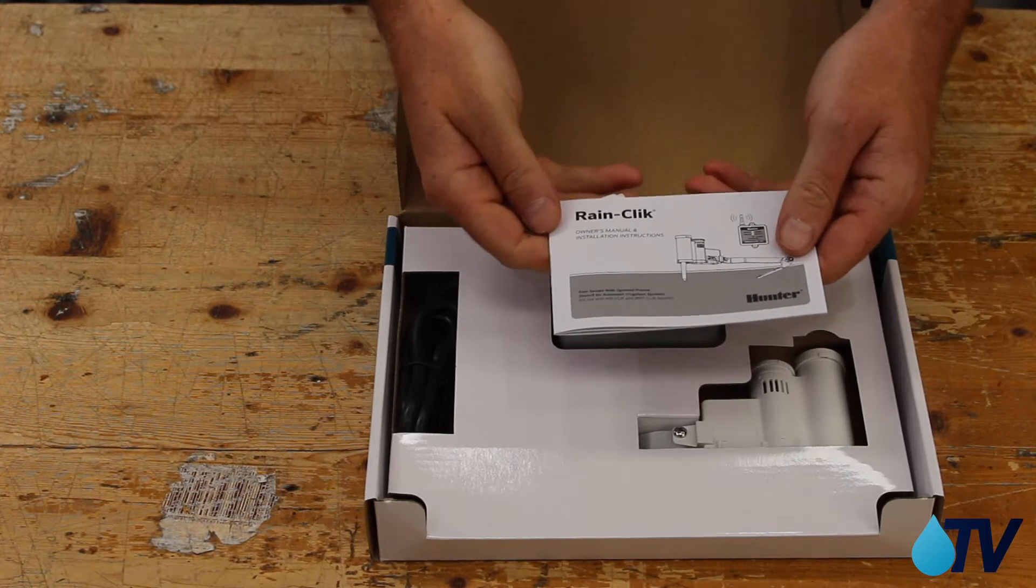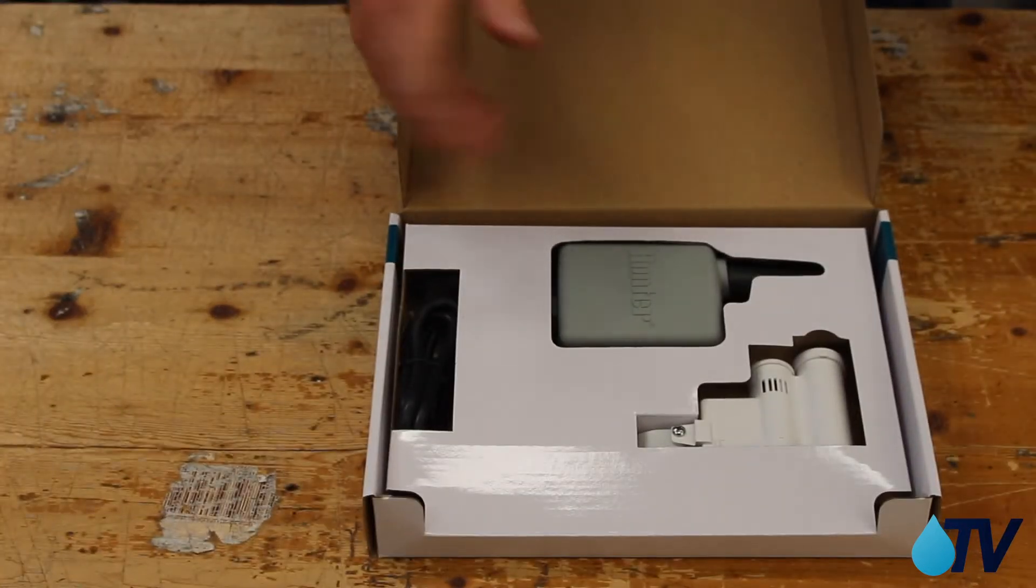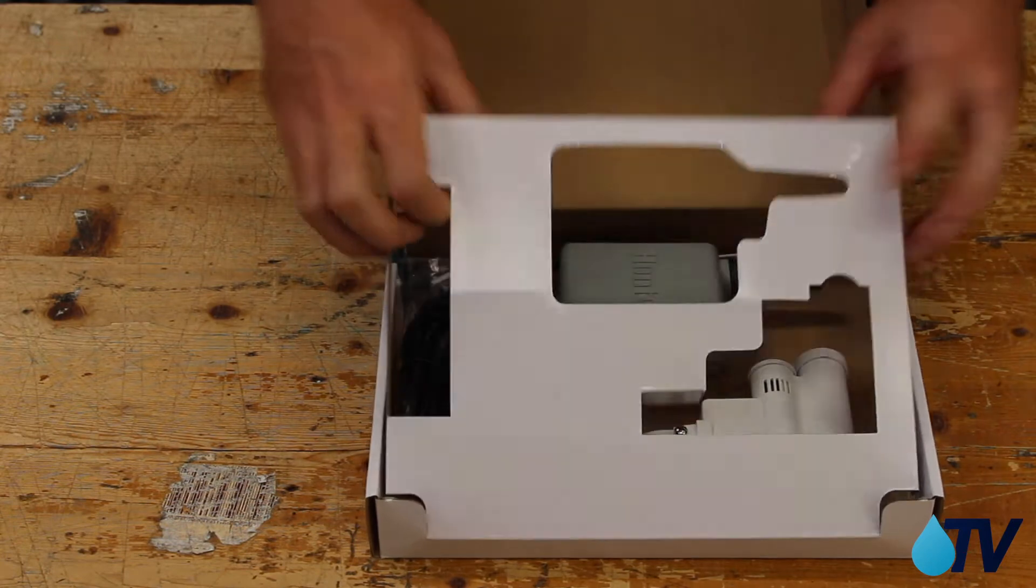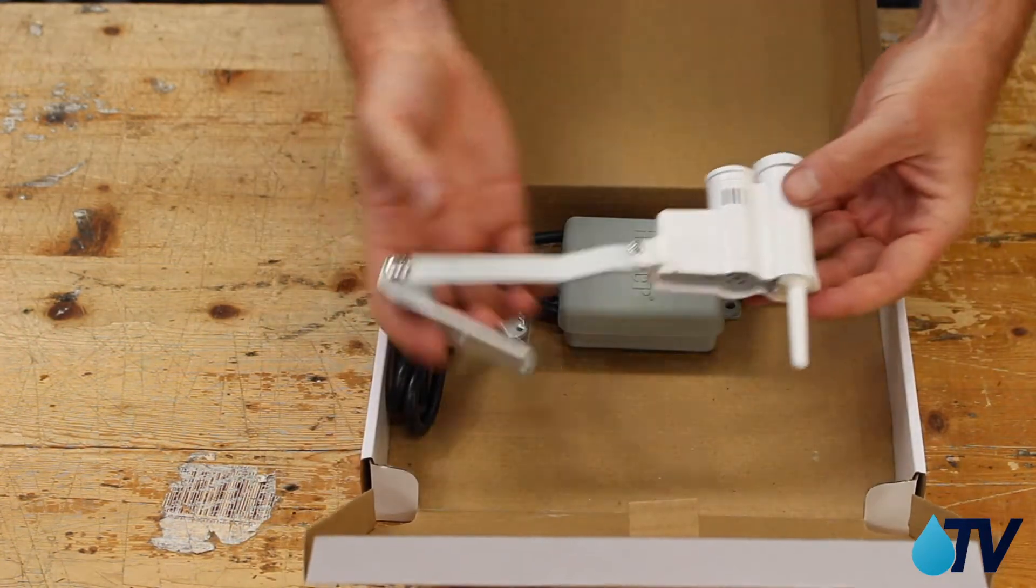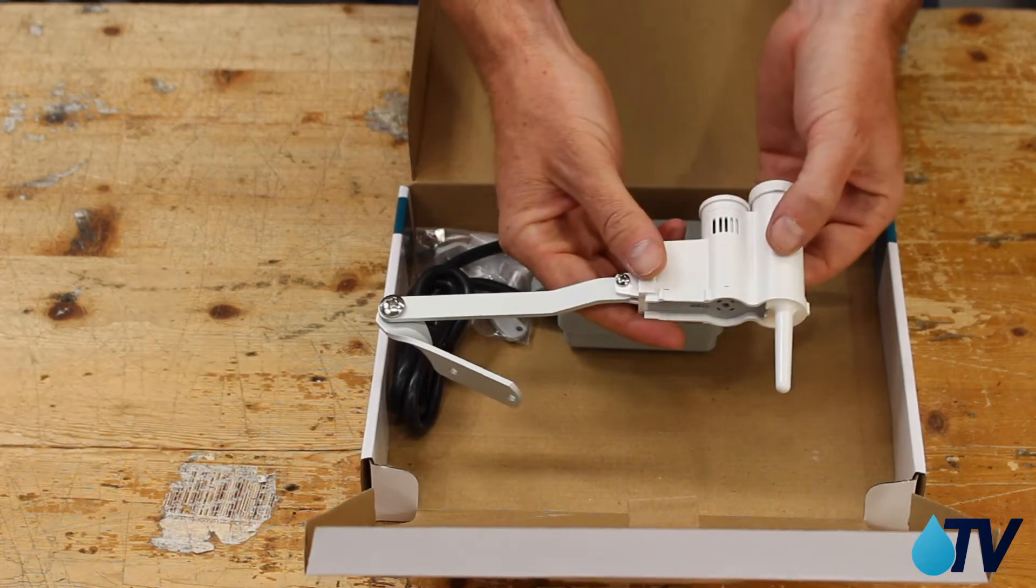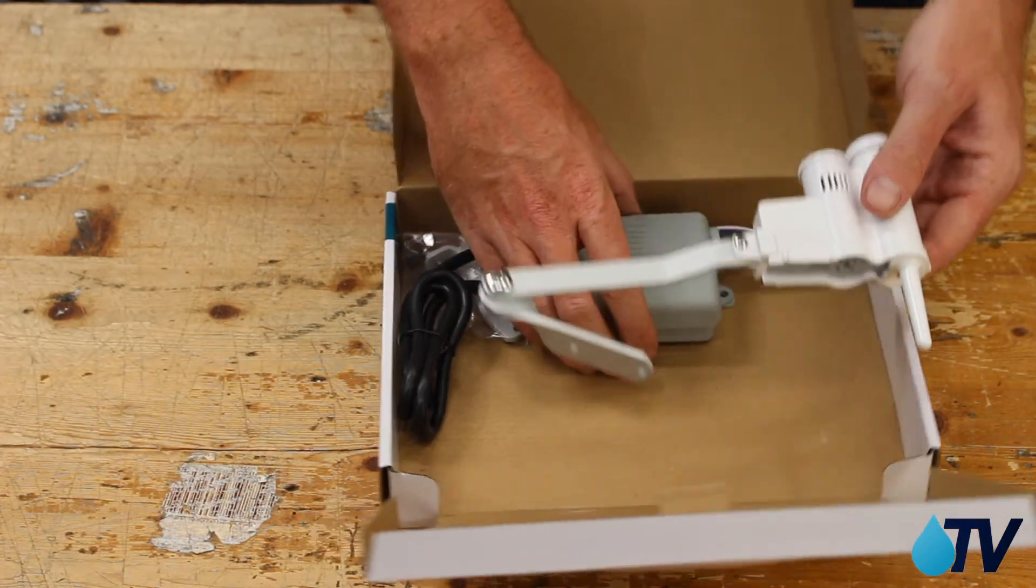So we've got our owner's manual. Rain sensors are pretty simple, but there's a couple extra bits with the wireless ones. So let's take a look again. Okay, here we've got the RainClick, that's your actual rain sensor right here with a wireless module. That's your transmitter.